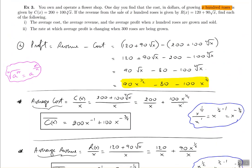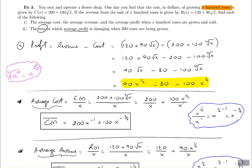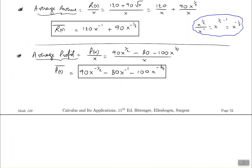That completes part one. In part two, they want the rate at which the average profit is changing when 300 roses are being grown. The word 'rate' means derivative. So we need the derivative of the average profit — P-bar of X, which is 90 X to the negative one half minus 80 X to the negative one minus 100 X to the negative three quarters — and then plug in X equal to 3 for 300 roses.